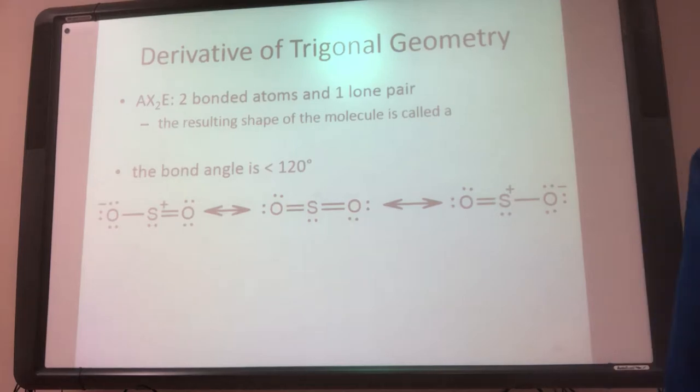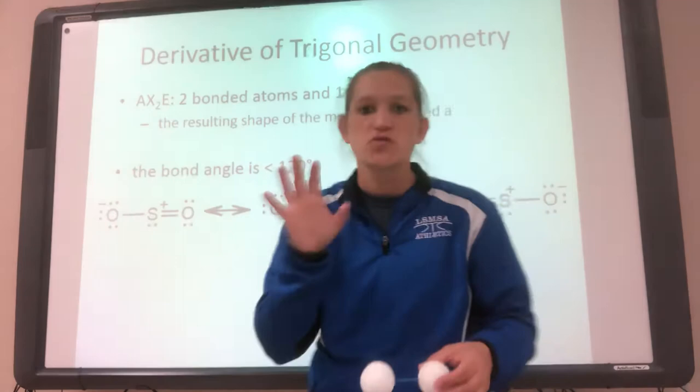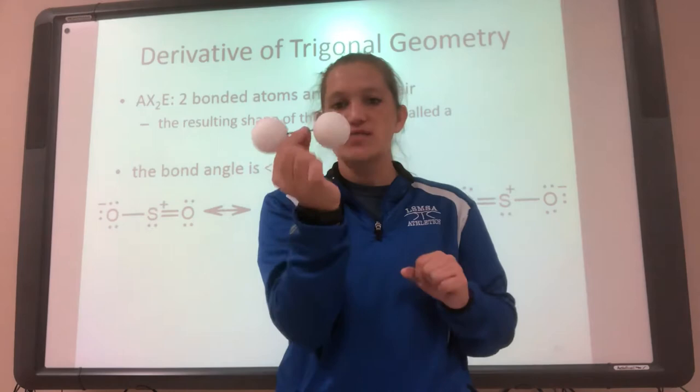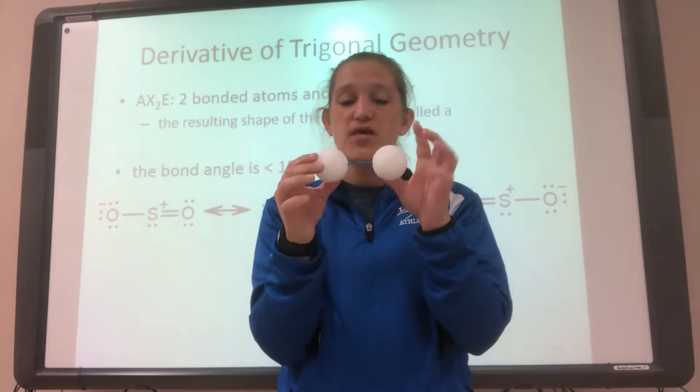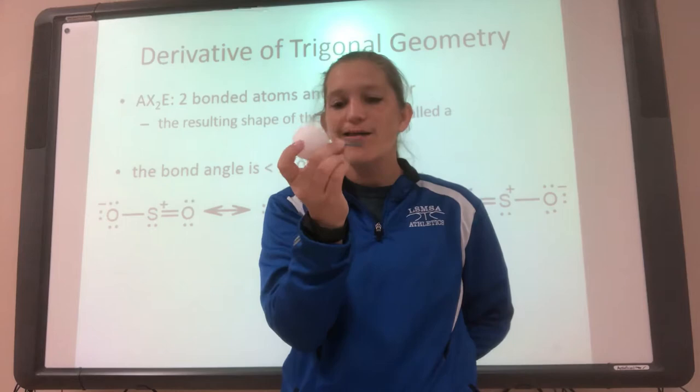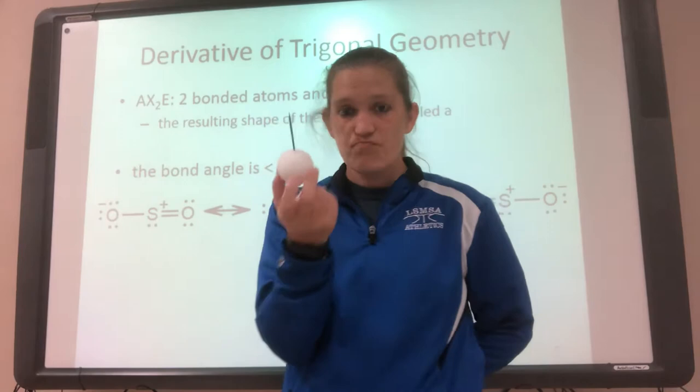Let's talk about the derivatives. I don't have a slide for the derivative of a linear, so just write this down and think about it. The first kind of sub-linear was where it was just one central atom and one thing attached. But now instead of this being a bond, say this was just a lone pair — so it's just an element by itself with lone electrons. We don't really talk about the shape of that.